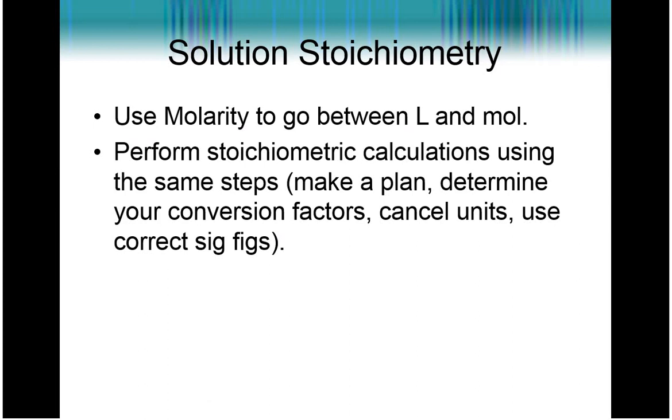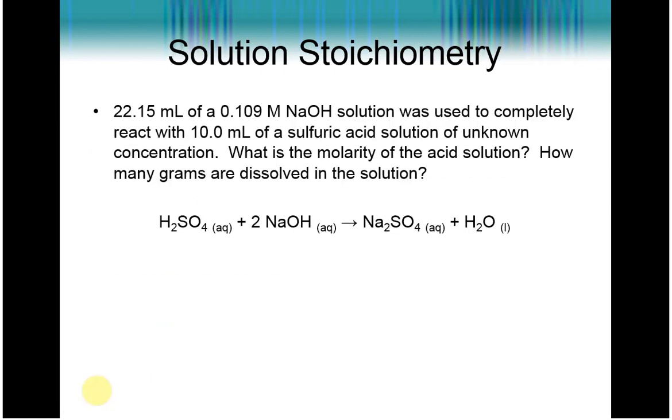Everything else about our stoichiometric calculations is going to remain the same. You need to make a plan. You're going to figure out what your conversion factors need to be, whether it's molar mass or your mole-to-mole ratios. You need to get those. And then when you do your calculation, set up to cancel your units. And then especially in lab, make sure you're using the right number of sig figs.